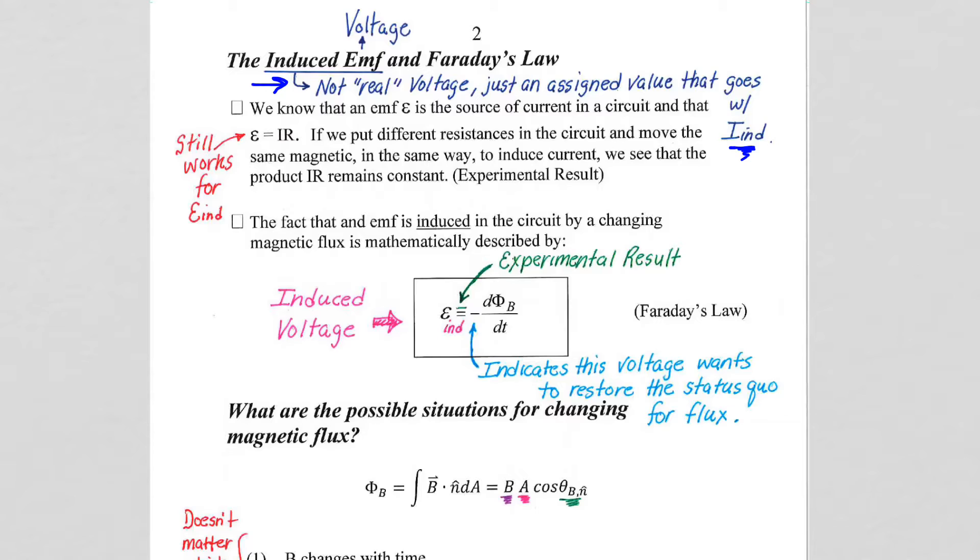For us, we are going to think of this EMF voltage as an assigned value in a region of space. In the region of space where the wire sits, regardless of whether the wire is there or not to produce the current.